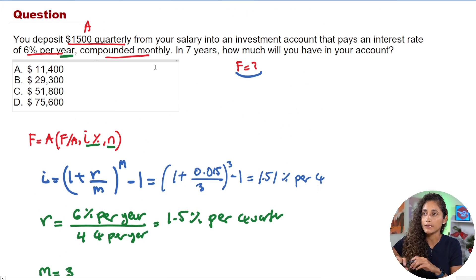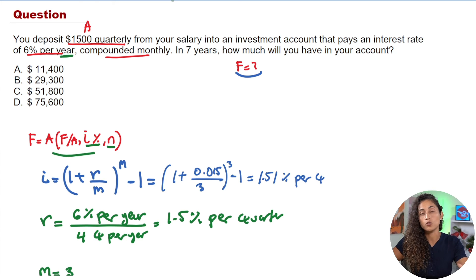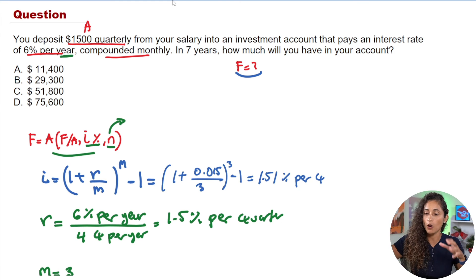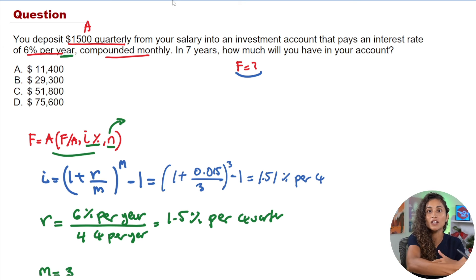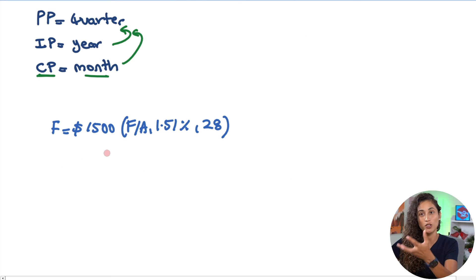Now let's find n. We're finding the future value seven years from now, but every term in the equation is in quarters, so we need to convert. There are 4 quarters per year, and 4 × 7 years = 28 quarters. So n = 28 quarters.